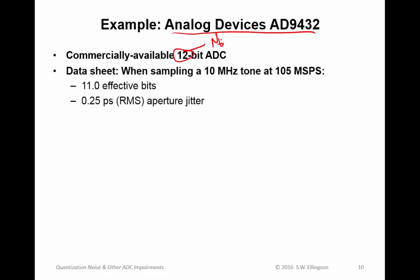So an example here to see how these parameters play out. It's by a company known as Analog Devices Incorporated, and it's their model number AD9432. It's a commercially available 12-bit analog-to-digital converter, that is n_b is 12.